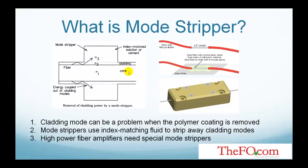One solution is to splice the short fiber to a longer length of passive fiber. The passive fiber can remove the light in cladding modes. Another solution is to use a drop of index matching fluid on the fiber, as shown in this picture.